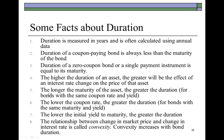The longer the maturity of an asset, the greater the duration. The lower the coupon rate, the greater the duration — coupon rate and duration are inversely related. Similarly, the lower the initial yield to maturity on a bond, the greater the duration — those two are also inversely related. Bond portfolio managers have determined that the relationship between change in the price of a bond and the change in interest rate is actually not linear — it is convex, and this convexity increases with the duration of a bond.